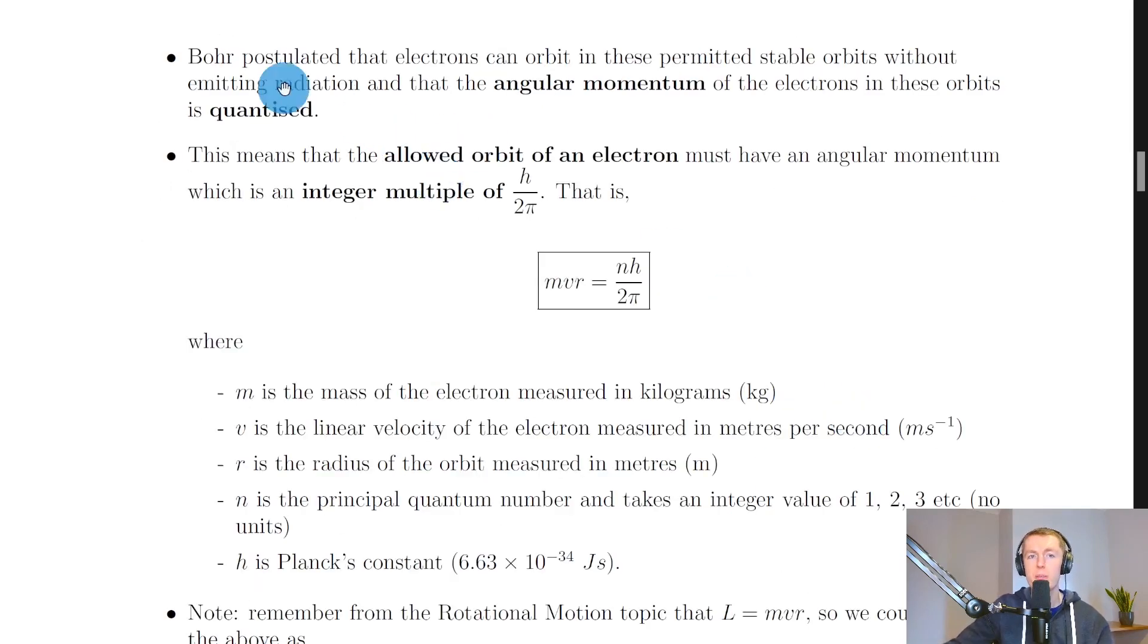It then goes on to say that Bohr postulated that electrons can orbit in these permitted stable orbits without emitting radiation and that the angular momentum of the electrons in these orbits is quantized. So this helps to explain why the electrons don't spiral in towards the nucleus of an atom. So this idea of quantization of angular momentum means that the allowed orbit of an electron must have an angular momentum which is an integer multiple of h over 2π. That's Planck's constant divided by 2π. That is,